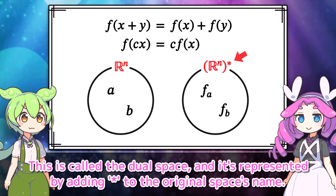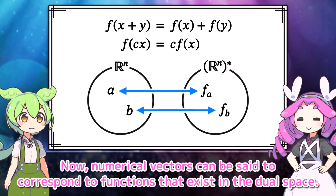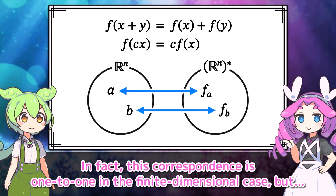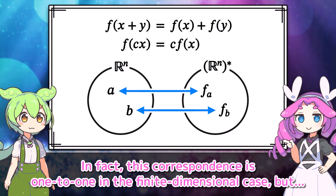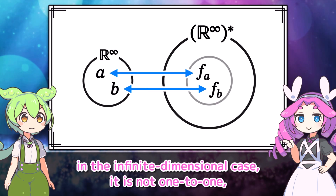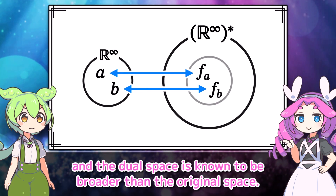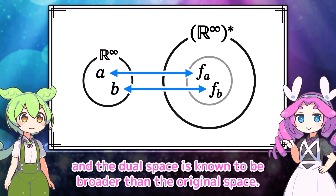Then, in the n-dimensional space we've been considering — in other words, for the n-dimensional Euclidean space — we consider the space formed by all functions like f that satisfy linearity. This is called the dual space, and it's represented by adding a star to the original space's name.